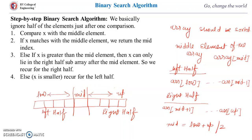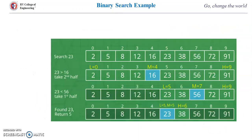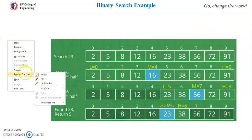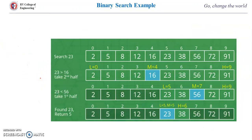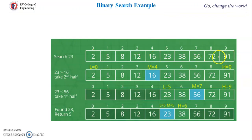Now let me explain with an example. Here is the array: the elements are 2, 5, 8, 12, 16, 23, 38, 56, 72, and 91. This is a sorted array with 10 elements total. So low will be the first element and up will be the last element.